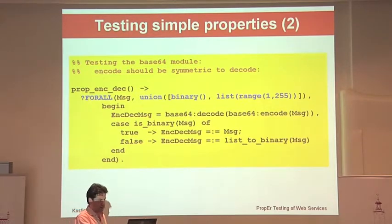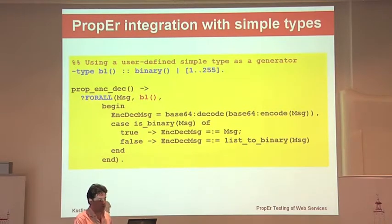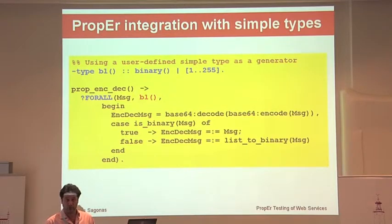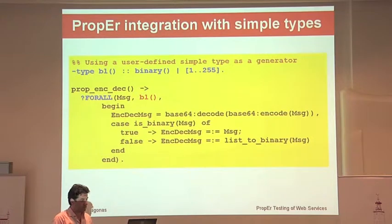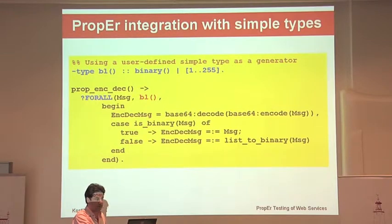This shows what you would have to write if you didn't have types and specs. ProPer has a magic way of taking a type declaration from your program and automatically turning it into a generator, so you don't need to write generators yourself, provided you have annotated your Erlang program with types. This is all stuff I've presented before, so I'll go fast. You can download the tool and play with these examples.